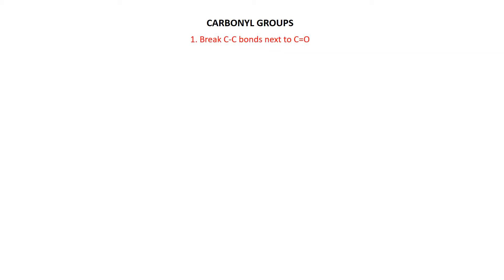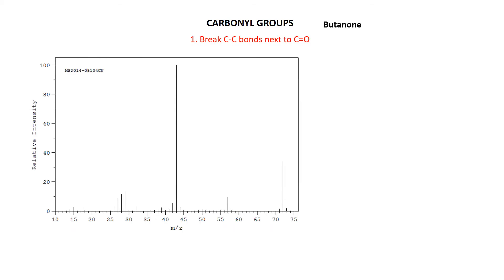The next functional group is carbonyl groups, and carbonyl groups like to fragment in the same way. You've got a carbon-oxygen double bond, so they'll break the carbon-carbon bonds next to that. Let's start off with butanone, as it gives a nice little structure. For carbonyl compounds — aldehydes and ketones — you will frequently see the molecular ion.